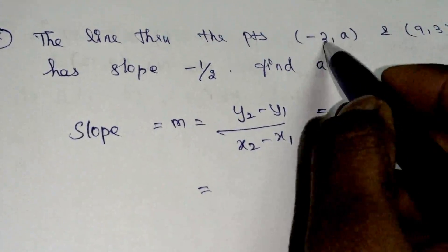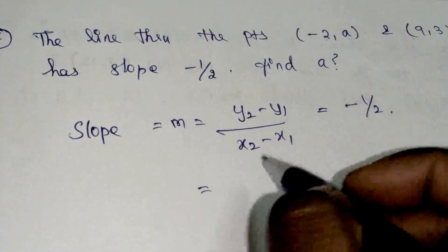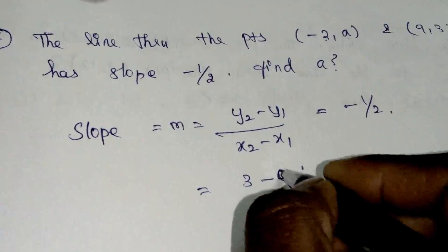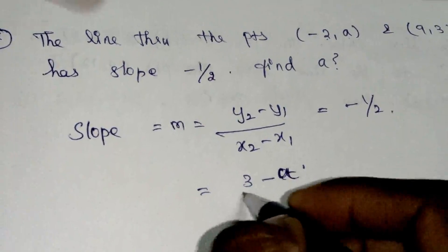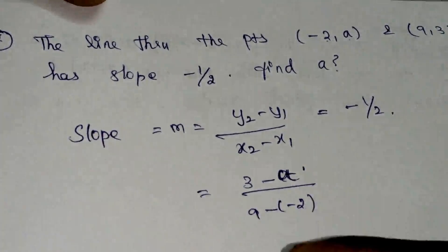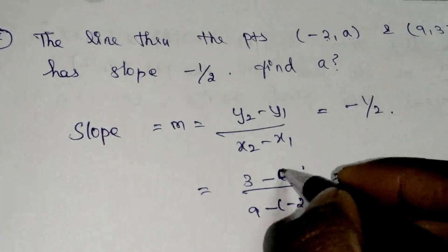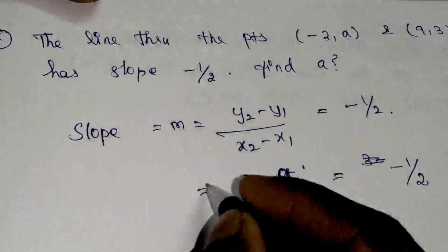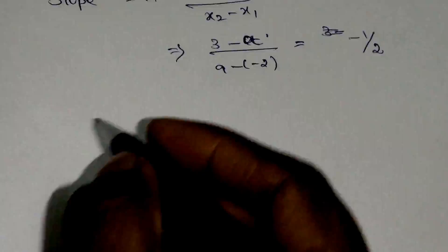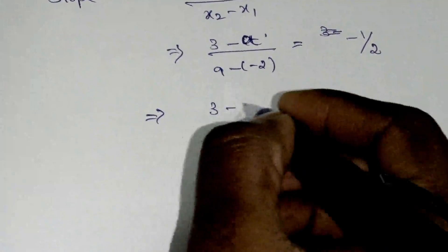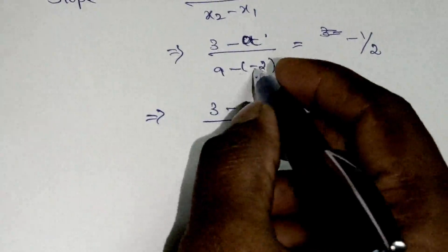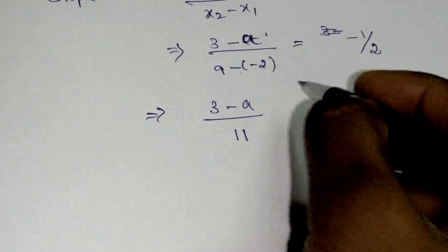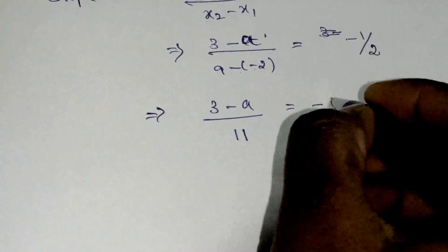So assigning the coordinates: x1 is minus 2, y1 is A, x2 is 9, y2 is 3. Substituting: 3 minus A divided by 9 minus minus 2, which equals minus 1 by 2. So 3 minus A divided by 9 plus 2, which is 11, equals minus 1 by 2.